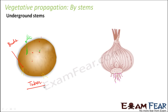The potato tuber is a fleshy underground storage structure. It is like an enlarged modified part of the stem, a swollen part of the stem which acts as a storage structure. That's about potato.